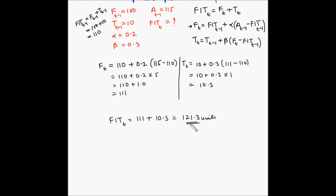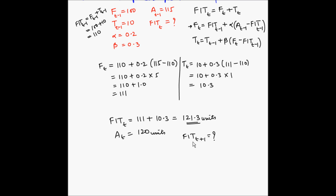Now let us say that after period t is over, we realize the actual for period t is 120 units. So what will be the forecast for period t plus 1? Before we proceed, let us first understand the information we have in the form of a graph. Let me make some space here to draw the graph.